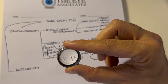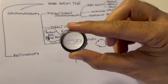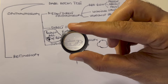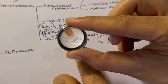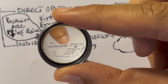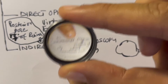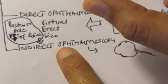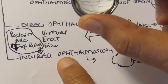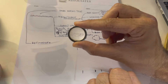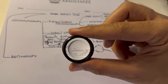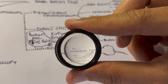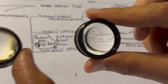In order to do indirect ophthalmoscopy, you can use condensing lenses. This is a super field or a 90-diopter lens, and this is used when you are examining the fundus through a slit lamp. As you can see, the image is inverted in this lens and slightly minified.